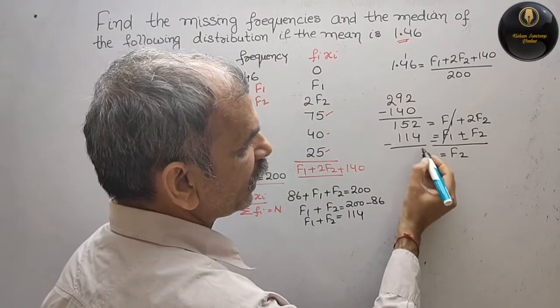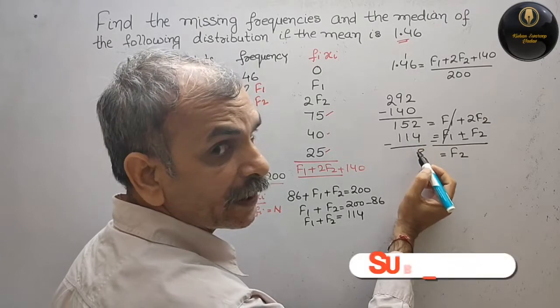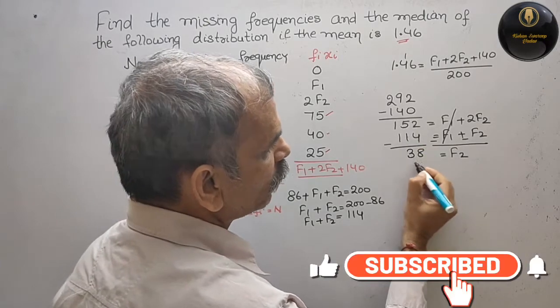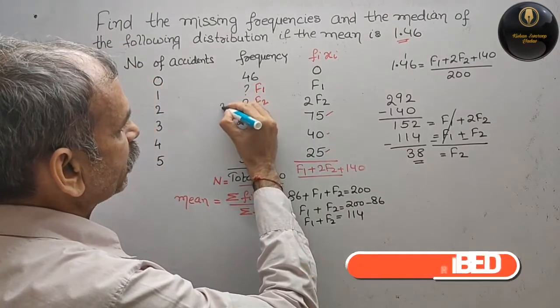f2 is equal to what? 12 minus 4 is 8. Here 4 will remain, 4 minus 1 is 3. So f2 is 38. We will write here f2 is 38.